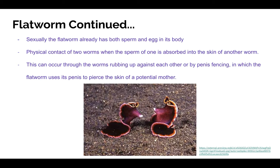Sexually, the flatworm already has both sperm and egg in its body; therefore, it can fertilize its own egg. Another method of sexual reproduction is through physical contact between two worms, when the sperm of one is absorbed into the skin of another worm. This can occur through the worms rubbing up against each other, or by penis fencing, in which the flatworm uses its penis to pierce the skin of a potential mother. The image below shows two flatworms in the process of penis fencing.